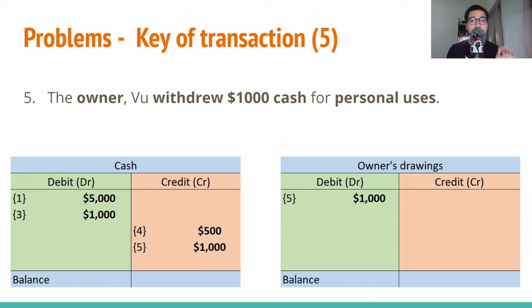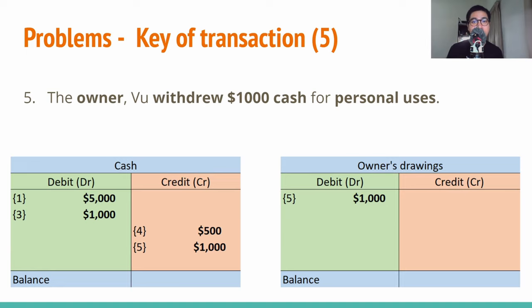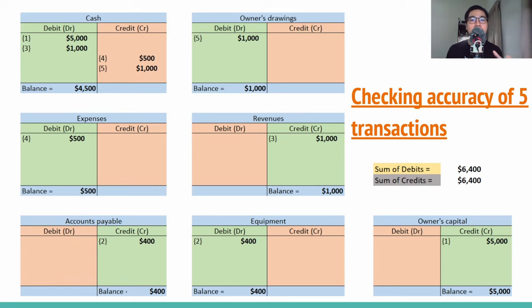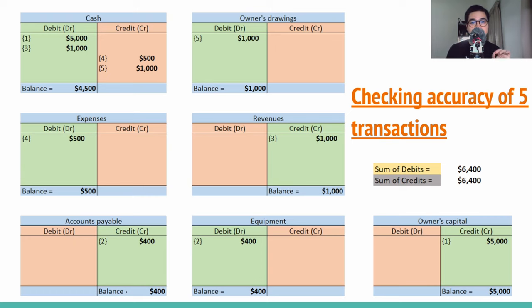The final transaction: owner Vu withdrew $1,000 cash for personal use. This transaction is similar to the previous one — there is no inflow of money, so the money just transfers from the cash account to the owner's drawing account. Final answer: the cash account is credited by $1,000 and the owner's drawing account is debited by $1,000. To check accuracy, we compare the sum of all debits versus the sum of all credits — if equal, you pass; if not, you have to redo it. As you can see here, I passed.